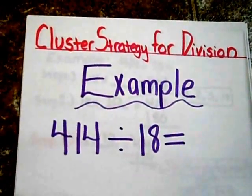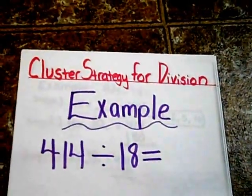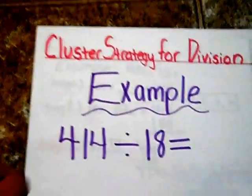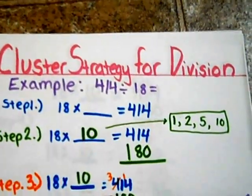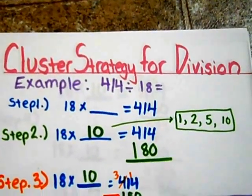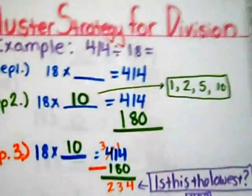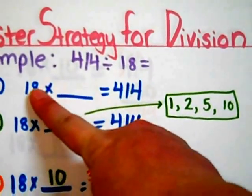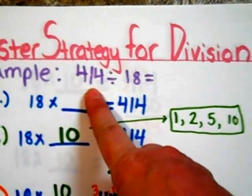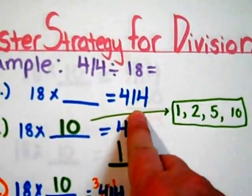Here is an example. 414 divided by 18. Step one, make the division problem into a multiplication problem. I have taken the divisor and made that into a factor. I've taken the dividend and made that into a product.